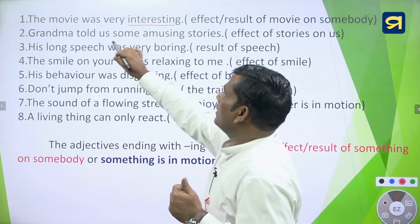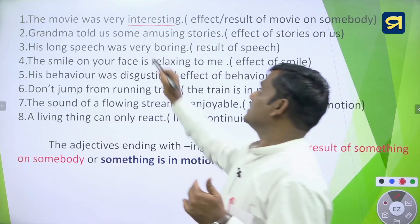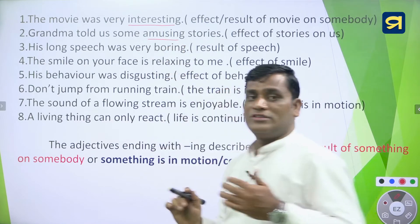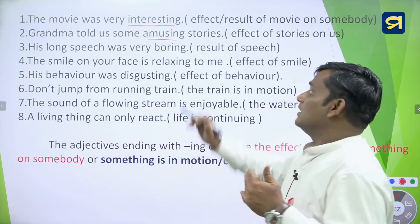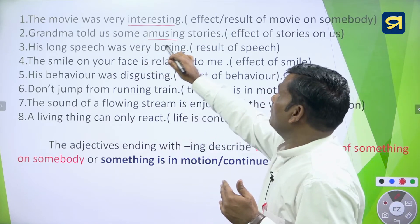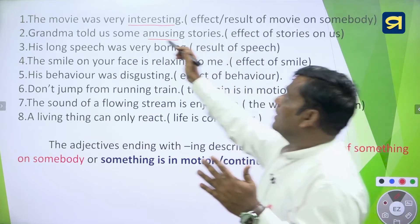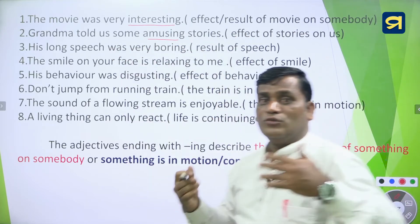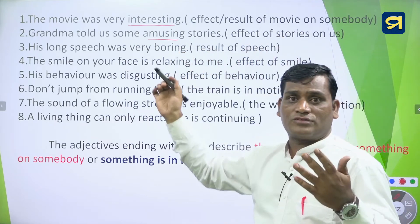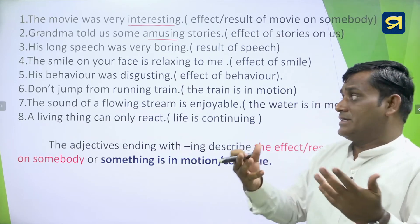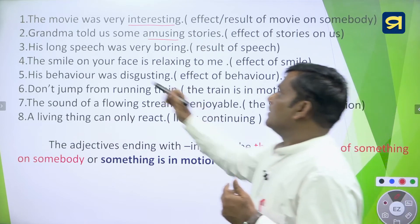Similarly, 'Grandma told us some amusing stories' — amusing is the ING form adjective. Due to the stories we feel amused. It is the effect of the story; due to the story we feel amused. When something creates a feeling in our mind, the ING form of adjective is used. Third example: 'His long speech was very boring' — boring is the ING form adjective.